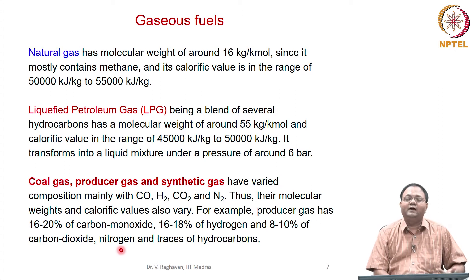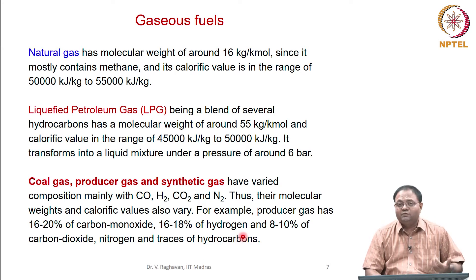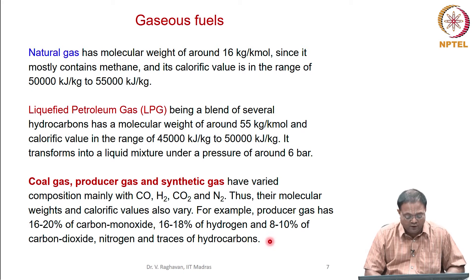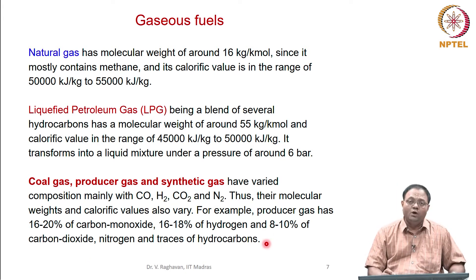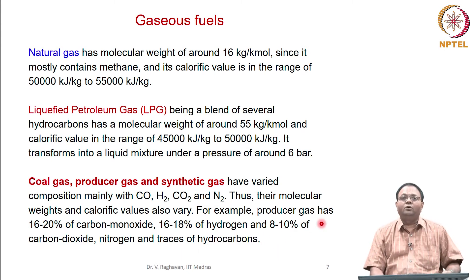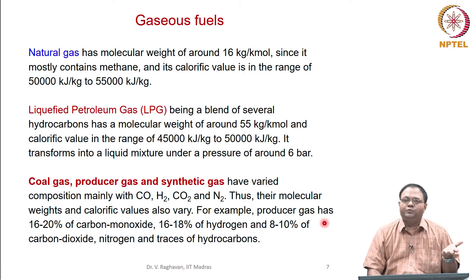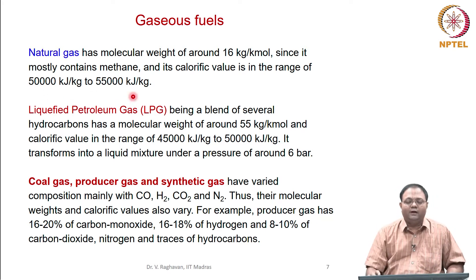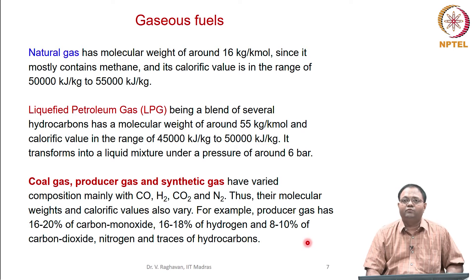The main disadvantage of producer gas is that most of the remainder is nitrogen, which is not a fuel. CO2 is also not a fuel; they are inerts. CO2 can absorb heat as a radiation-absorbing species and radiate to the far field. Nitrogen and carbon dioxide take heat from the flame, reducing the calorific value. Nevertheless, producer gas can be used for several applications where very high calorific values like those of natural gas or LPG are not required, by properly designing the combustion chamber and supplying fuel at a higher rate.